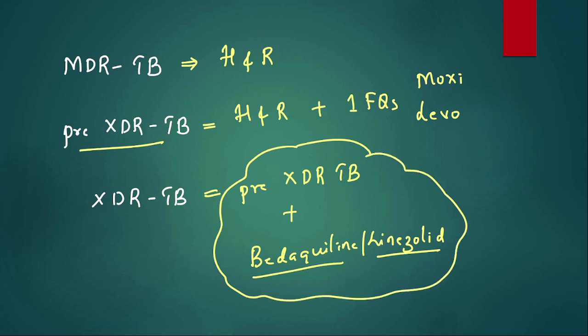Now there is a regimen that has been proposed for drug-resistant TB, that is called BPaL-M. BPaL-M regimen is mainly for bedaquiline, pretomanid, linezolid, and moxifloxacin. So all these are oral drugs and they can be completed within six months. So this is the new regimen for drug-resistant tuberculosis: BPaL-M regimen.